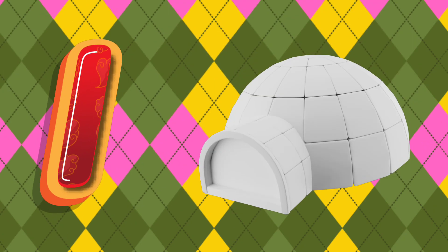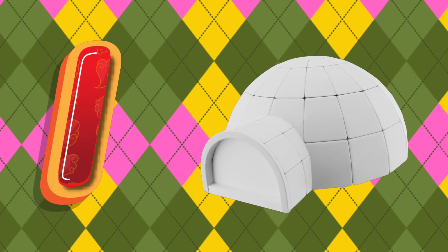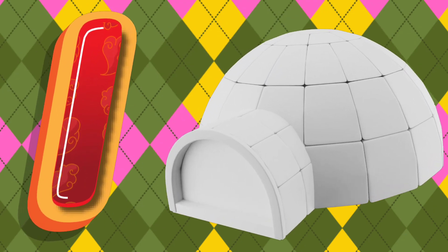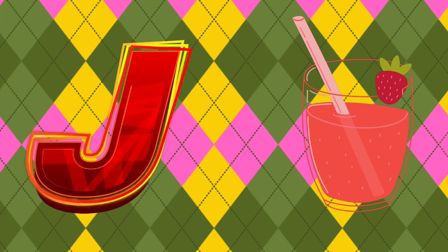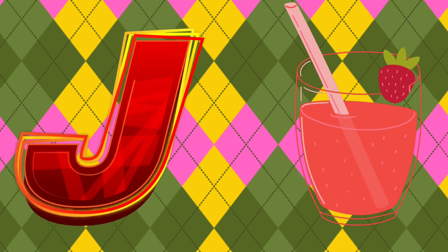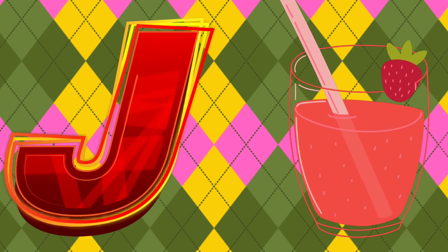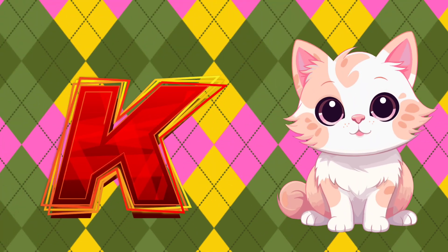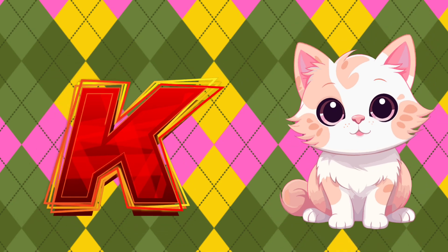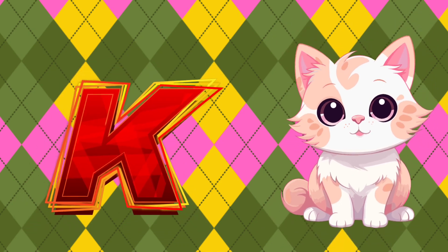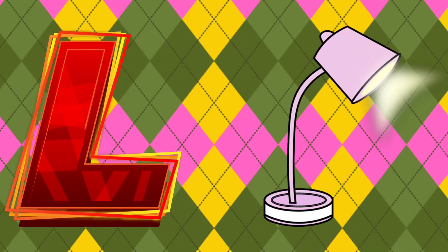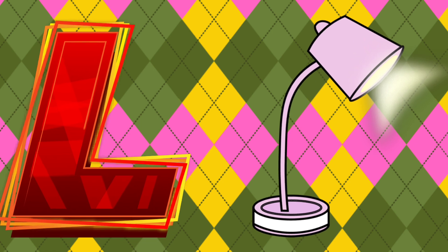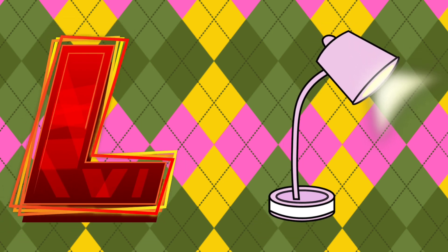I is for Igloo. J is for Juice. K is for Kitten. L is for Lamb.